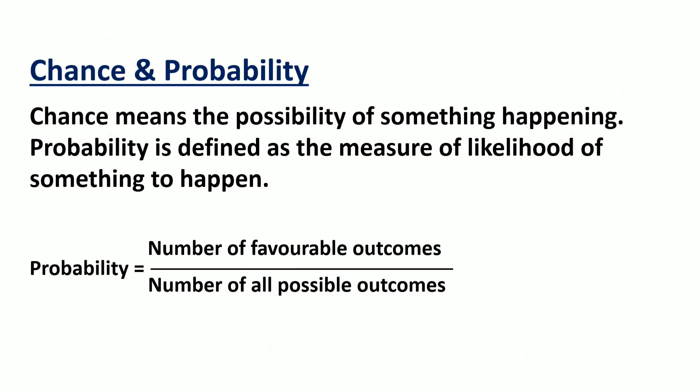The last and final topic in this revision session is chance and probability. Chance means the possibility of something happening. Probability is defined as the measure of likelihood of something to happen. That means probability equals number of favorable outcomes divided by number of all possible outcomes. In our day-to-day life, we often say probably it will rain tomorrow, or most probably I will score first class in my annual exam. We are not sure about the happening of events. The event may or may not happen.